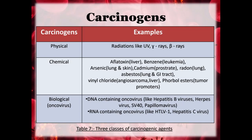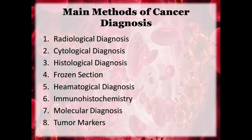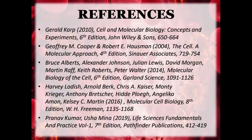And here we have come to the end of the Biology of Cancer. These are a few common early signs for detection of cancer, some of the main methods of cancer diagnosis, and some of the types of cancer treatment. These are the references. Thank you.